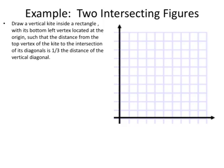Here's another example. We want you to draw a vertical kite inside a rectangle, and the rectangle has its bottom left vertex located at the origin, such that the distance from the top vertex of the kite to the intersection of the diagonals is one-third the distance of the vertical diagonal. So I'm going to draw a rectangle and I want a kite inscribed. We want the distance of the top vertex of the kite to its intersection is one-third the distance of this. So this distance here is one-third the length of the vertical diagonal.